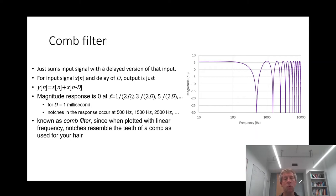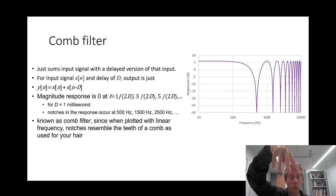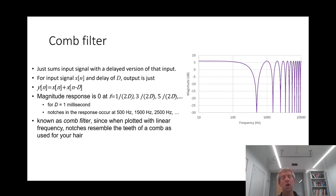Why is this called a comb filter? Well, in the figure shown, the frequency values for the magnitude spectrum are plotted on a logarithmic scale. But if you plot them on a linear scale, you see that the frequencies where the magnitude response drops to zero are equally spaced — and it looks like a comb that you would use to comb your hair. That's the shape of this magnitude response.